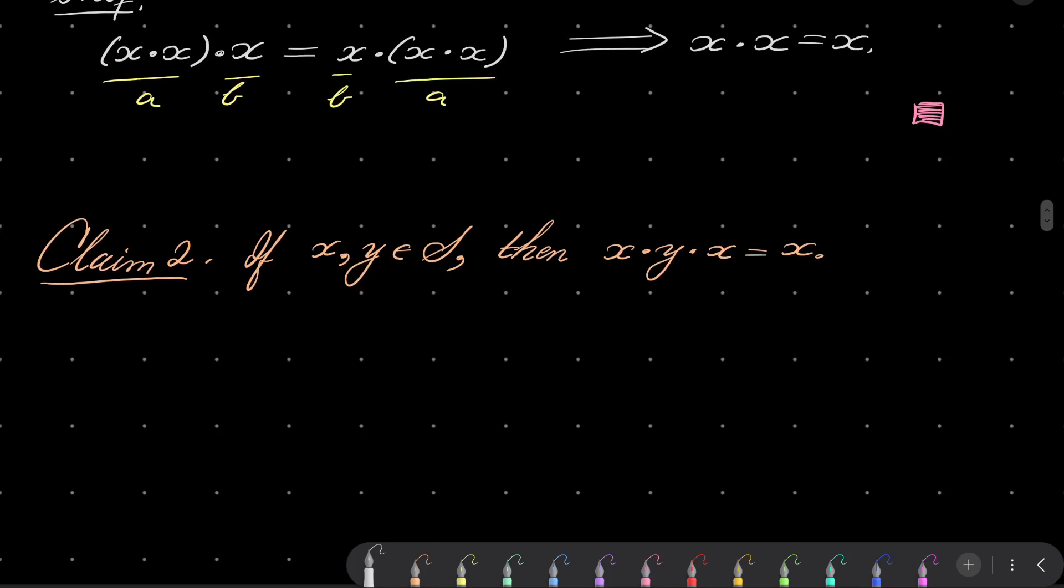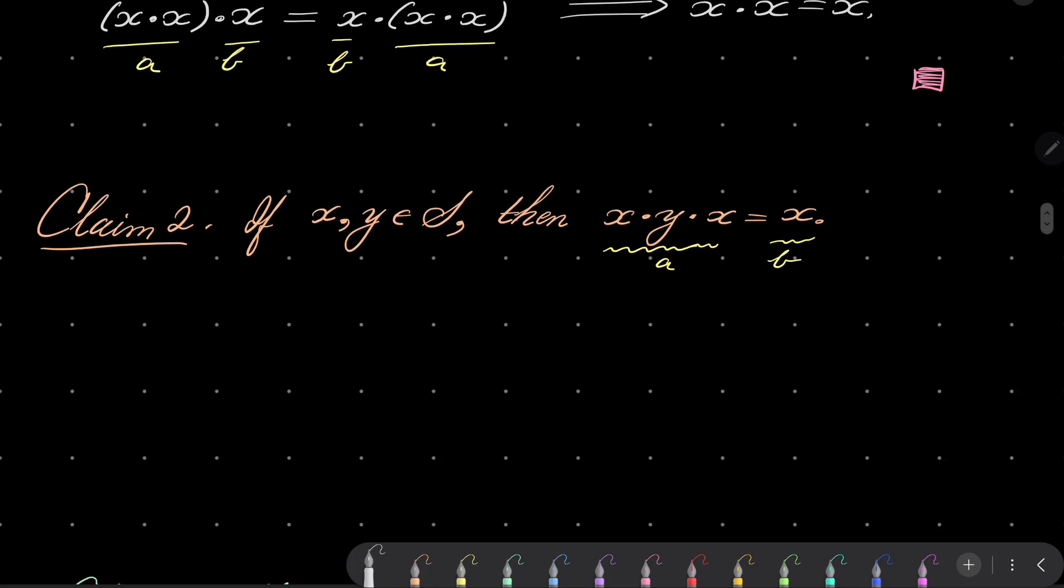Claim number two. We wish to prove that if x and y are any elements, then x·y·x equals x. Again, think about it. This is like a and this is like b. To show that a equals b, it's sufficient to show that a·b equals b·a. So let's investigate both of them.